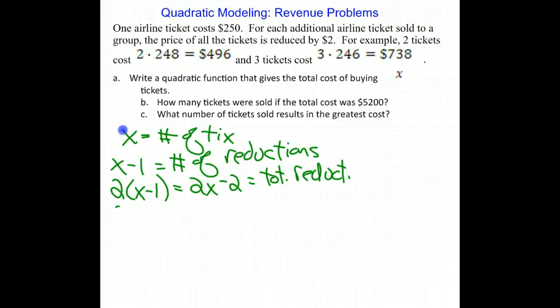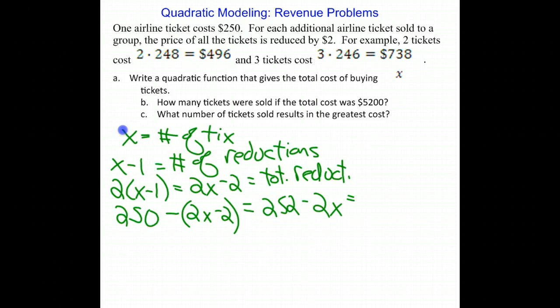that's the total reduction for each individual ticket. So the individual tickets now cost $250 - (2X - 2) or 252 - 2X. That stands for the cost per ticket.